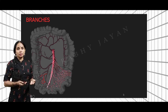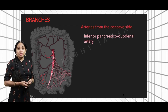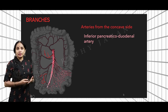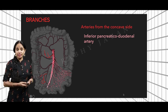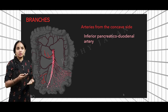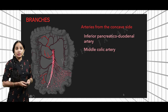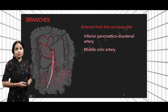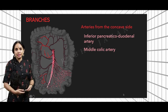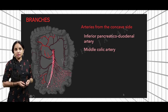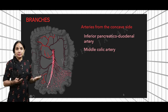The first and probably most important branch from the concave side — especially for multiple choice questions — is the inferior pancreaticoduodenal artery. It forms an anastomotic arcade around the second part of the duodenum and the head of the pancreas, supplying both these parts. You can see the inferior pancreaticoduodenal artery in the picture.